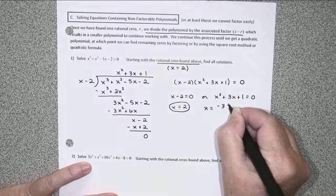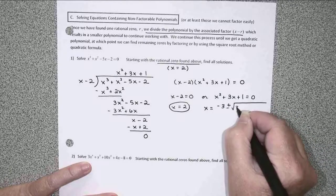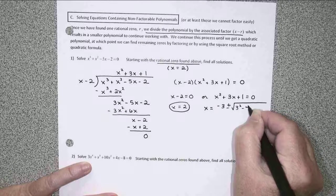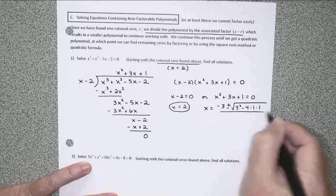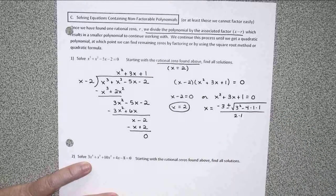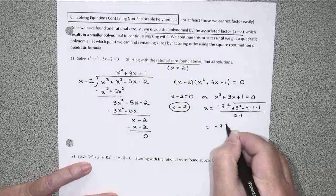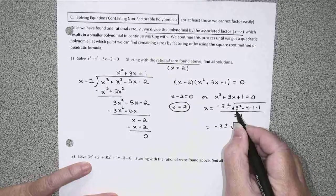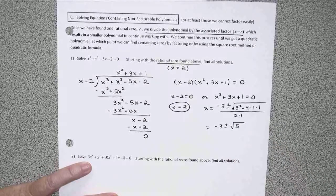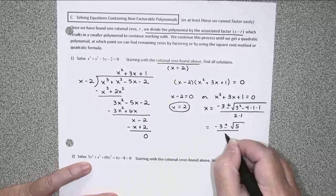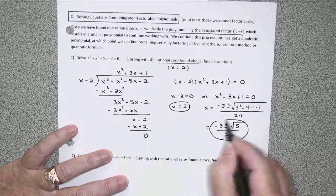Opposite of b would be negative 3 plus or minus the square root of 3 squared minus 4 times 1 times 1 over 2 times 1. Under the radical, 9 minus 4 would be 5 over 2. And I don't think I can reduce anything. So that's it.